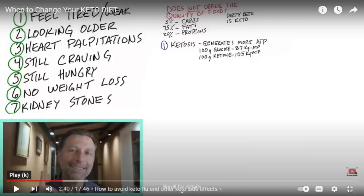He's got up there feeling tired, looking older, heart palpitations, still craving, still hungry, no weight loss and kidney stones. I'm going to break this down. Feeling tired and weak is because your protein might be too high, your fats are too low, or your thyroid is aggravated. You might have developed hypoglycemia or dysglycemia. Looking older is the gluconeogenesis from not using ketones because again your protein might be too high and your fats are too low. You're eating the wrong foods, the wrong type of ketogenic macros.